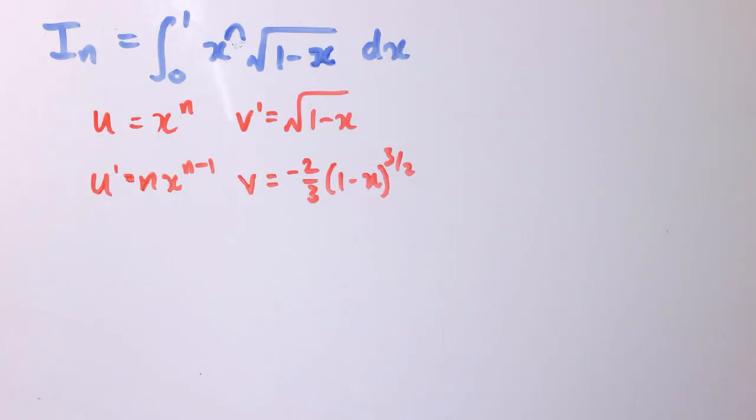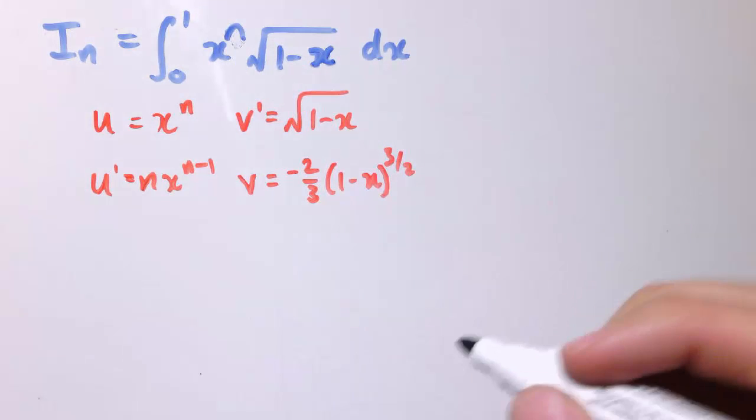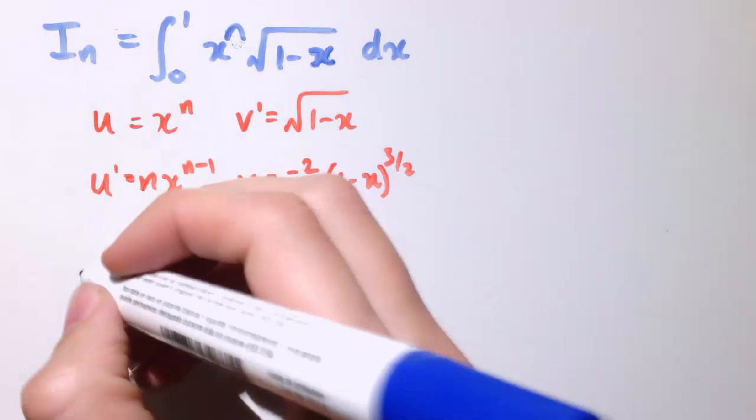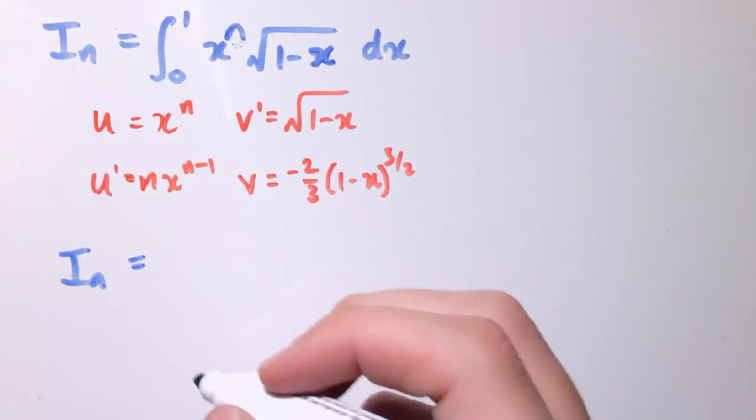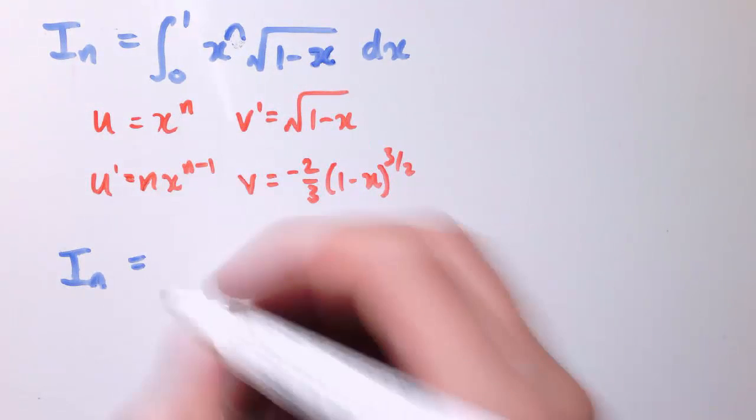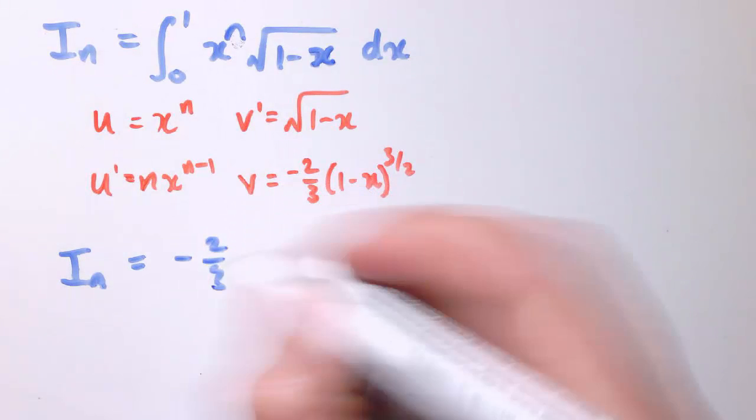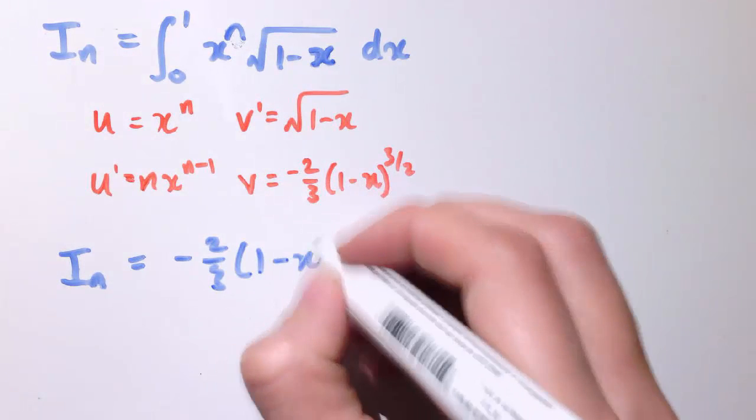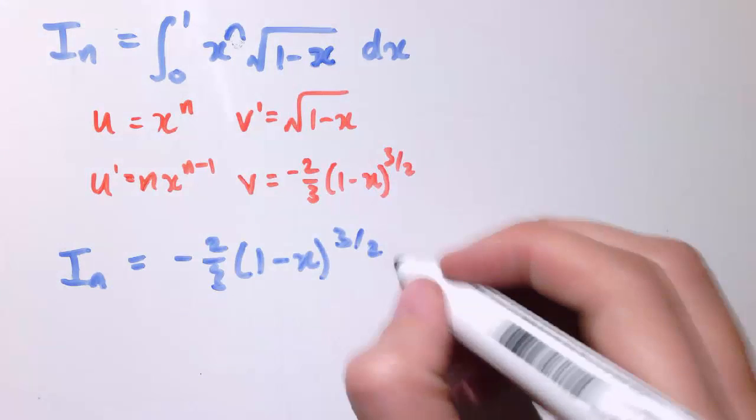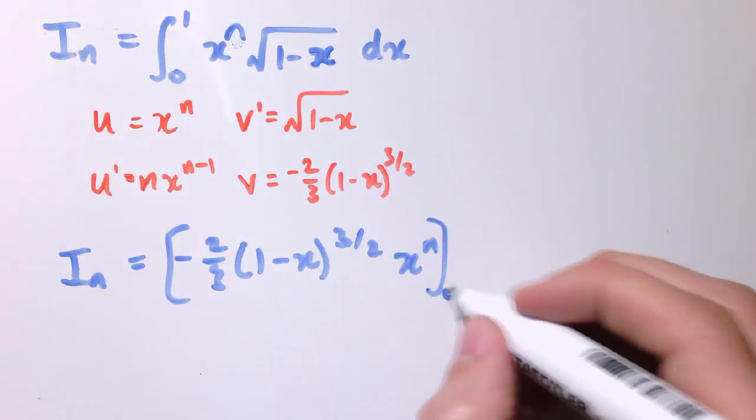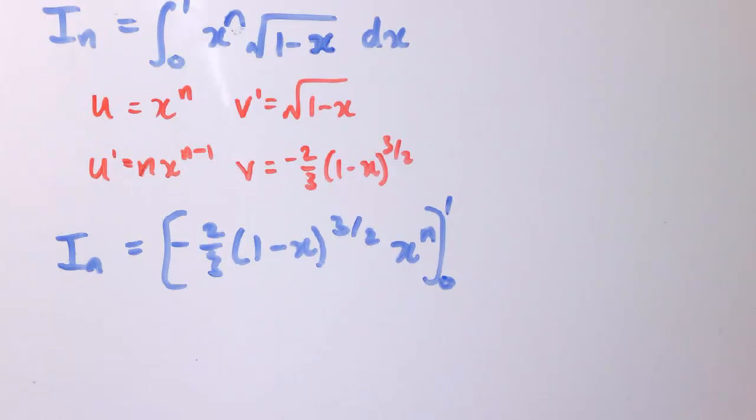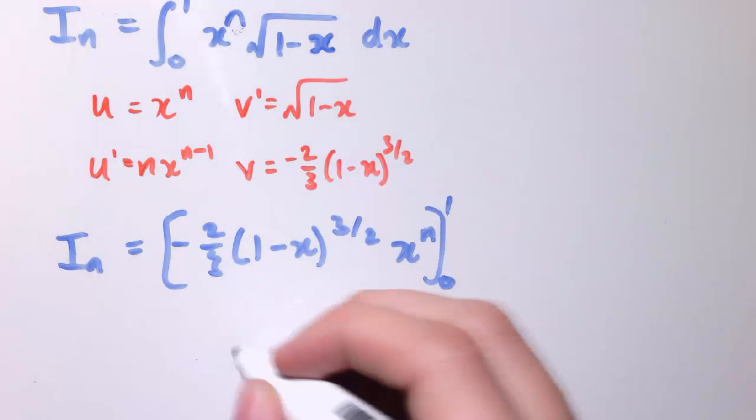Applying the integration by parts formula then gives us that this integral up here is equal to u times v, so minus 2 thirds, 1 minus x to the 3 over 2 times x to the n between 0 and 1.